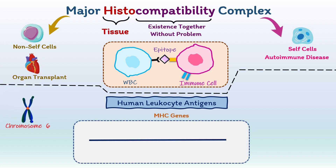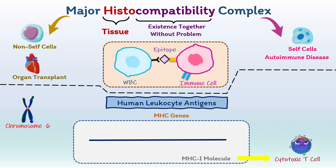It has two classes of genes. One class encodes MHC class 1 molecules that bind cytotoxic T cells through CD8 receptors. The other group of genes encodes MHC class 2 molecules that bind helper T cells through CD4.